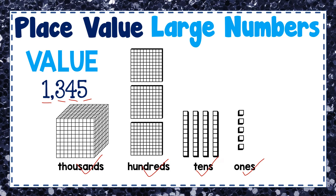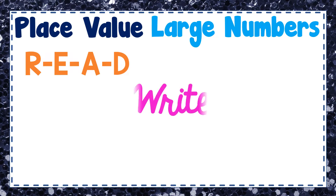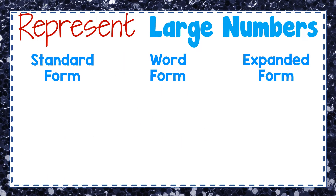When we get into really large numbers — millions, ten millions, hundred millions, billions — we don't have easy physical representations like that to represent their value. So you won't see the value represented as much with those larger numbers. We're going to work on reading, writing, and saying large numbers, and representing them in the three main forms.